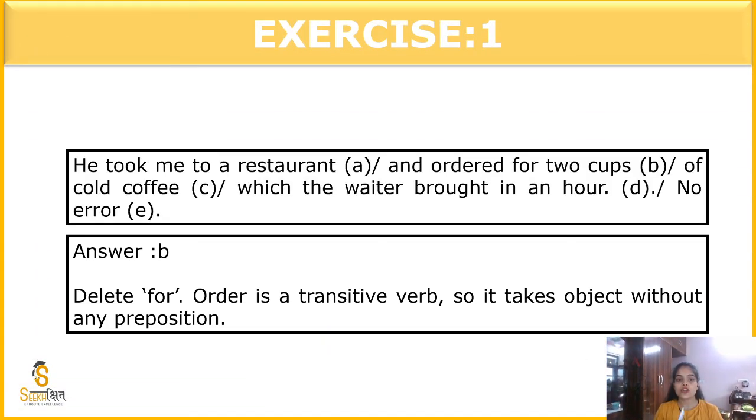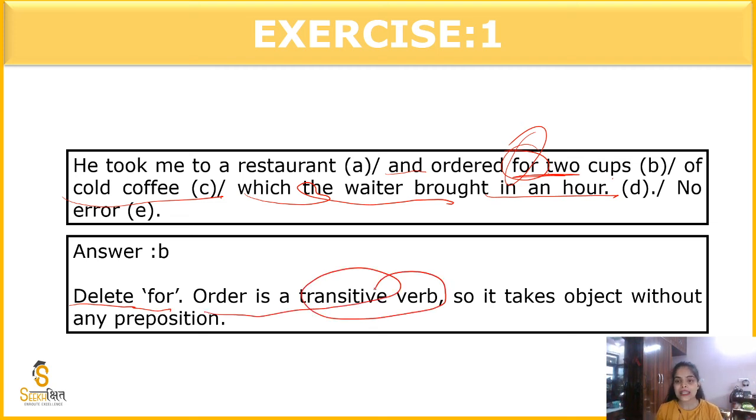The next question is, he took me to a restaurant and ordered for two cups of cold coffee which the waiter bought in an hour. No errors. So, there is error in the part B itself, because here 'ordered for' is used. Order for will not come here. Because, order is a transitive verb. Transitive verb already tells us the position. It's telling us already the flow. It is already telling that some action flow is happening. So, ordered for will not come. Ordered two cups - it is already implied that it is happening. So, 'for' is not needed here. So, the correct statement will be, he took me to a restaurant and ordered two cups of cold coffee which the waiter bought in an hour.